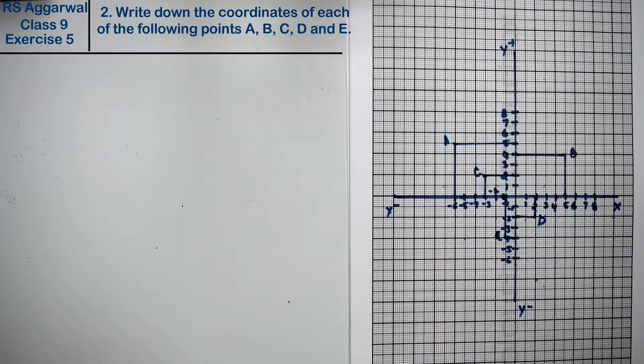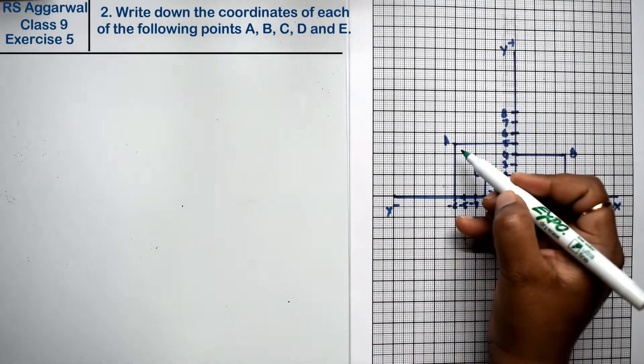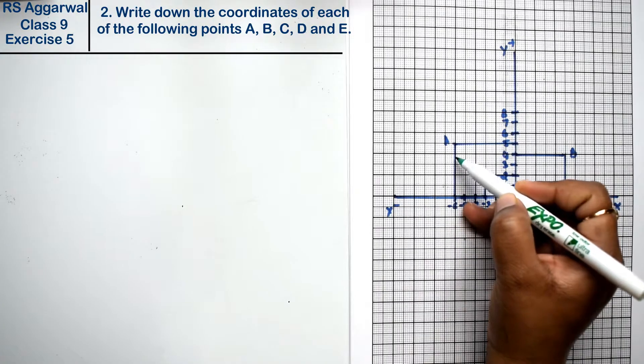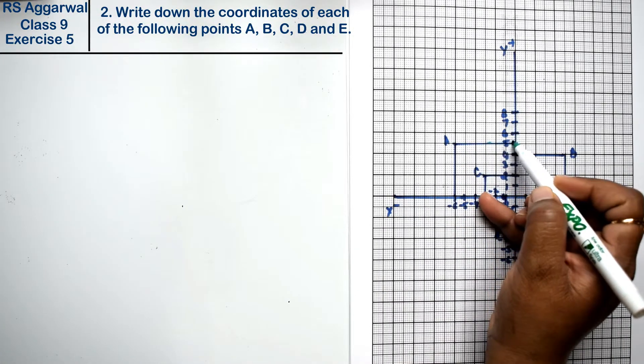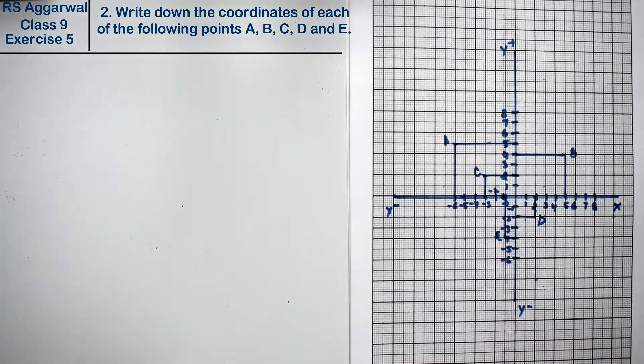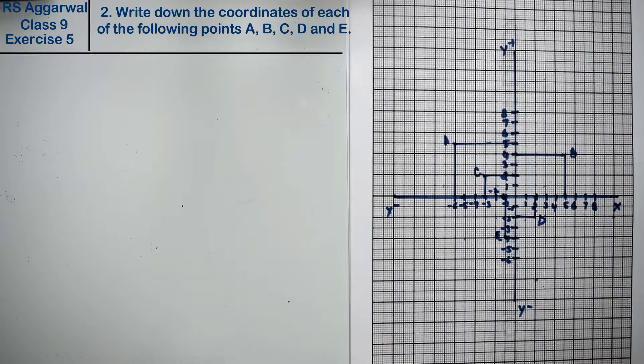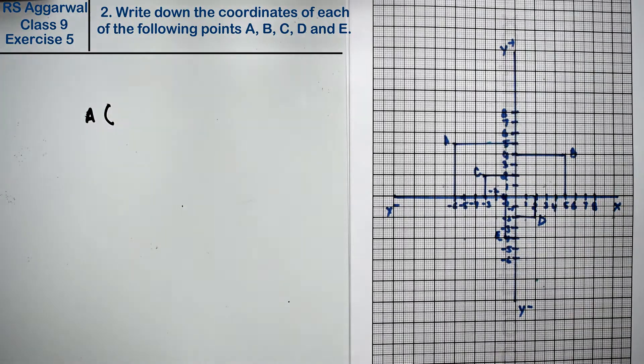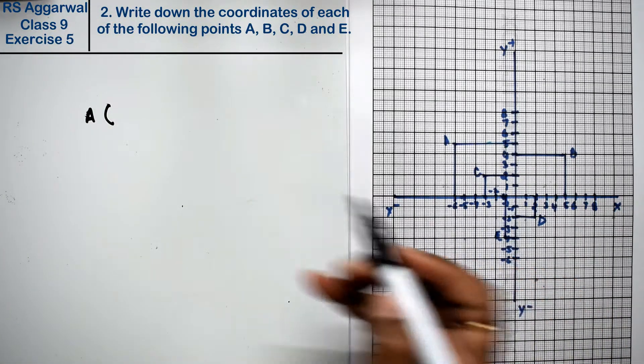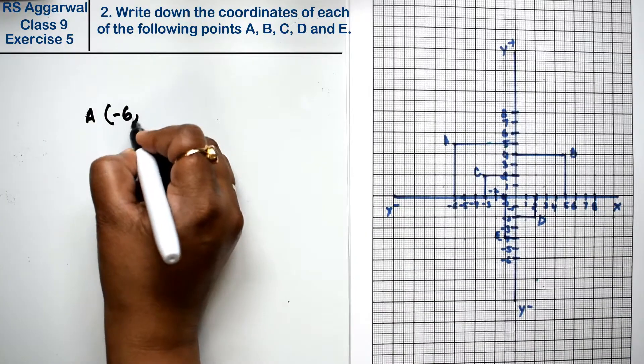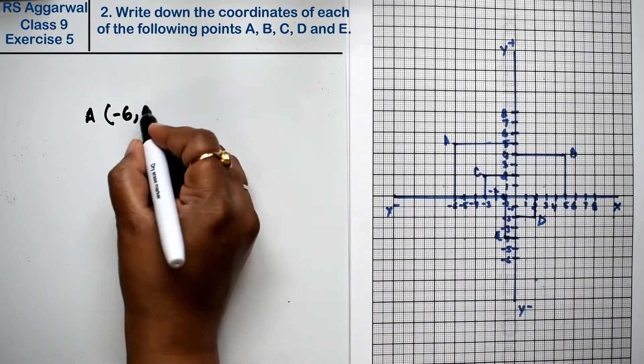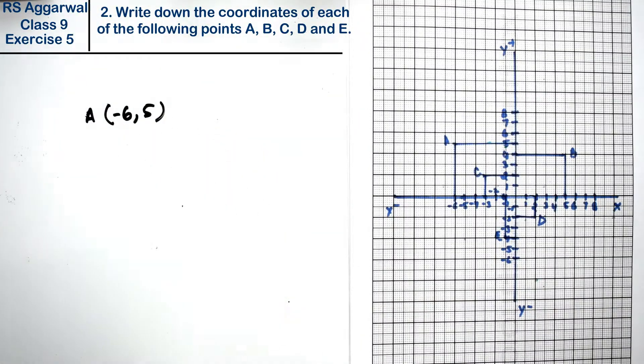Friends, first look at the first A point right, friends. A point is going to be minus 6 and Y point is going to be 5. So first when we write coordinates, we are writing A point first. We will write X value where is minus 6 and then Y value where is Y point is 5. So this is our first coordinate right friends.